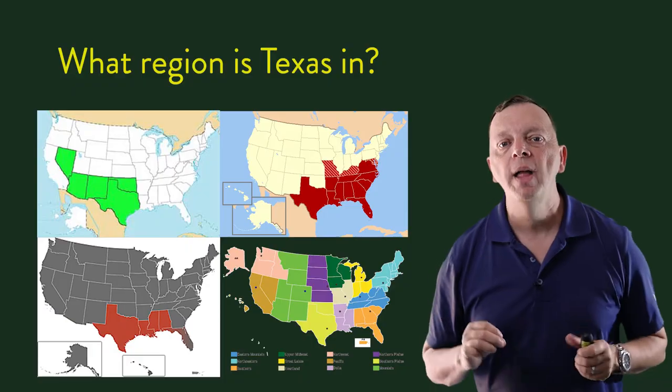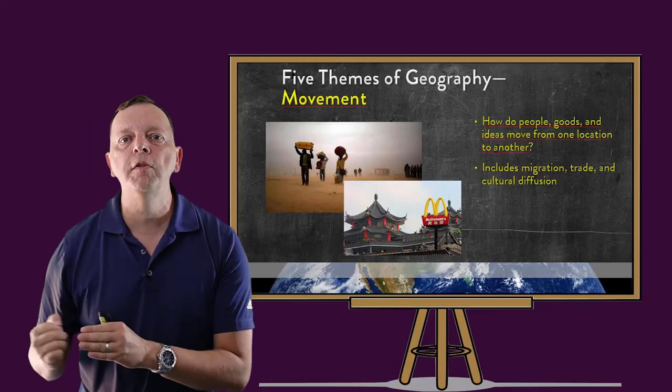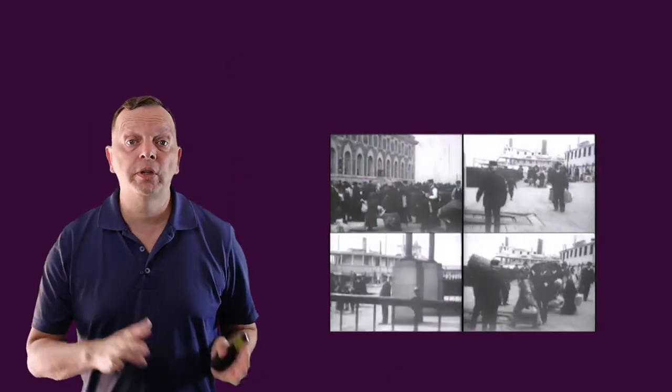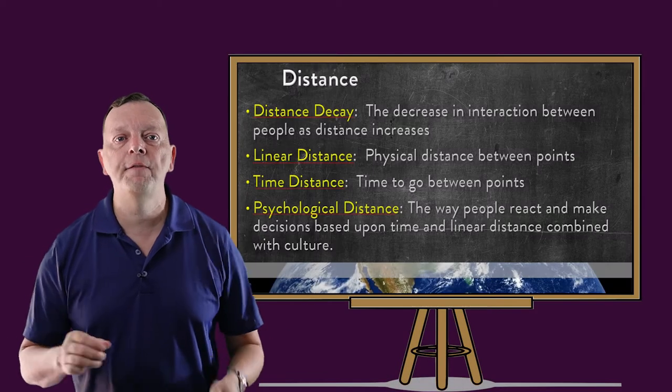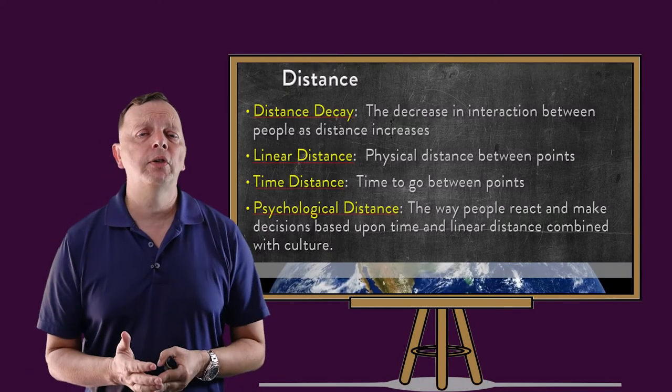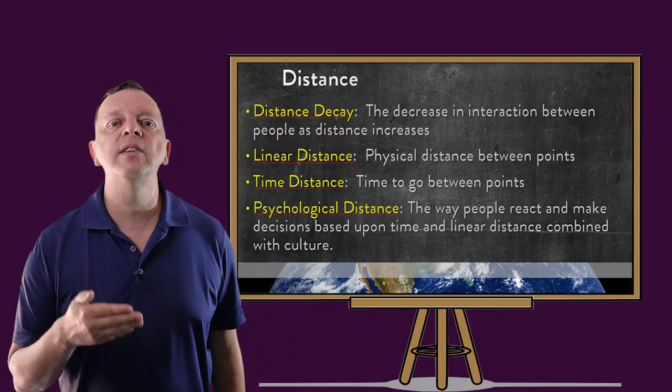Then there is movement. The theme of movement asks how do goods, people, and ideas move from one location to another. How people settle areas of the world and their patterns of migration is part of the theme of movement. Geographers will also use spatial relationships to see how religions, languages, and customs spread around the world, which is known as cultural diffusion. They will also study how cultures separate from each other — known as cultural divergence — and how cultures come together, known as cultural convergence. In looking at movement, geographers look at how distances affect the human experience. For example, a larger country such as Russia is harder for a government to control through something known as distance decay.